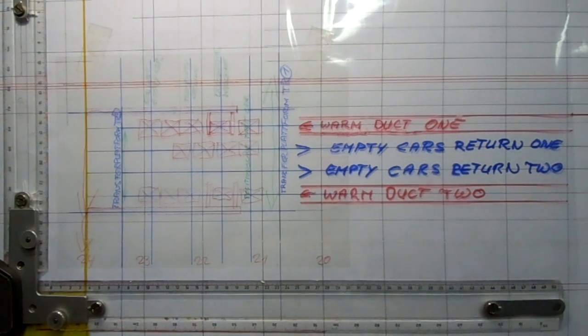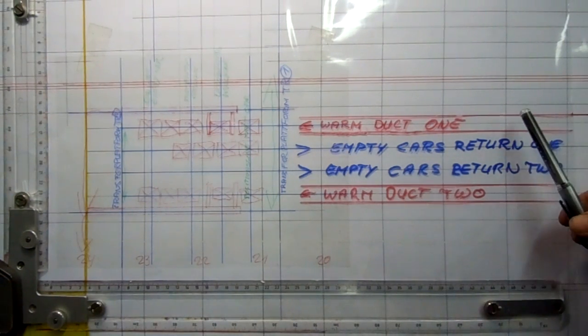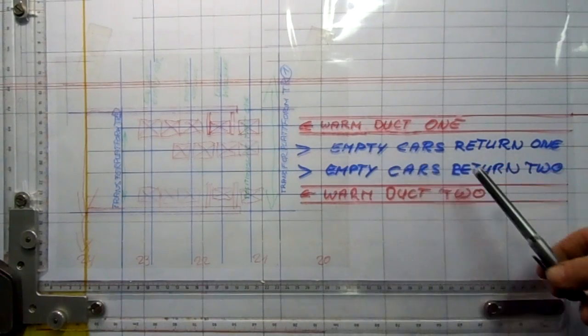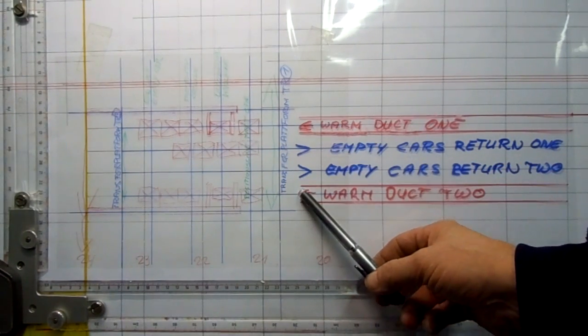So this is our warm return general one, or warm duct return one. This is the second line.